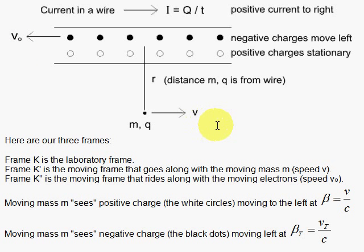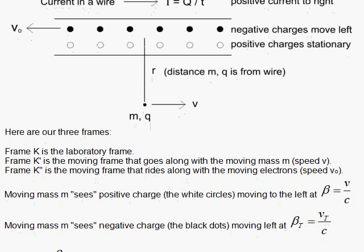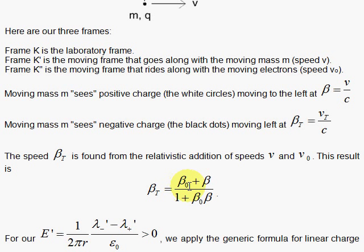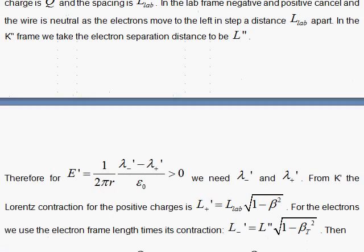When we are in the K' frame looking back, we'll see the positive charges moving to the left at speed v. So this beta v/c here is relevant for the positive charges moving to the left. When the moving charge q looks back and sees the electrons zipping to the left, that's going to be a total velocity given by the relativistic addition of the v0 and the v, because the electrons move at v0 relative to the wire, and the wire is moving at v, all going to the left. That's our relativistic addition formula here. Now we're ready to look at the equation that puts all this together.